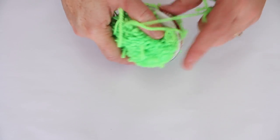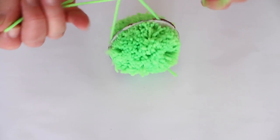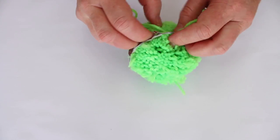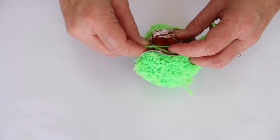Cut a piece of yarn about 20 centimeters long. Place it in between the two cardboard discs. Pulling the yarn tight around the center and tie several knots.